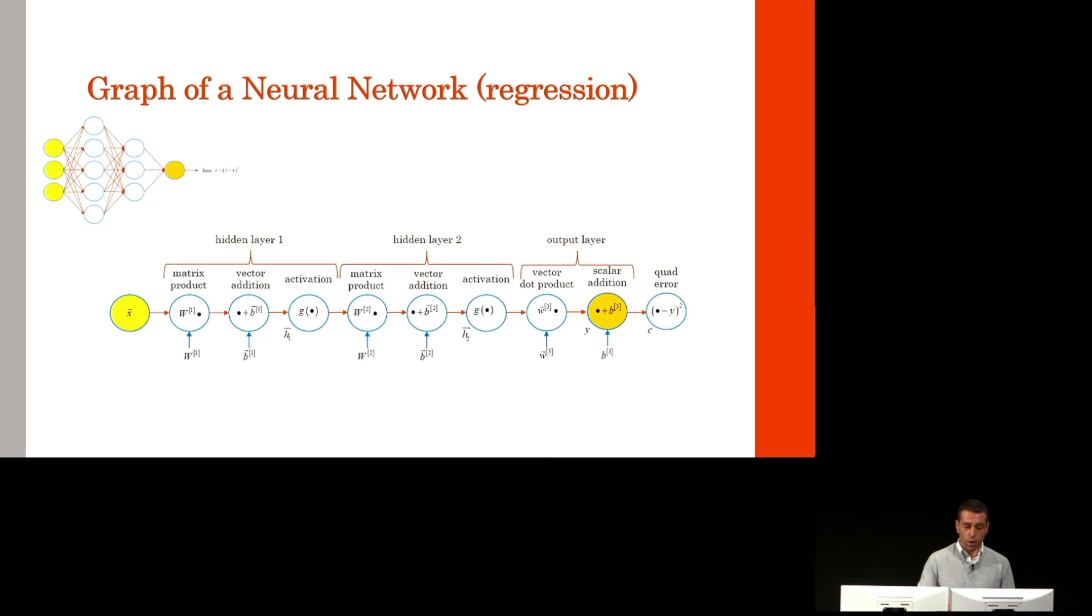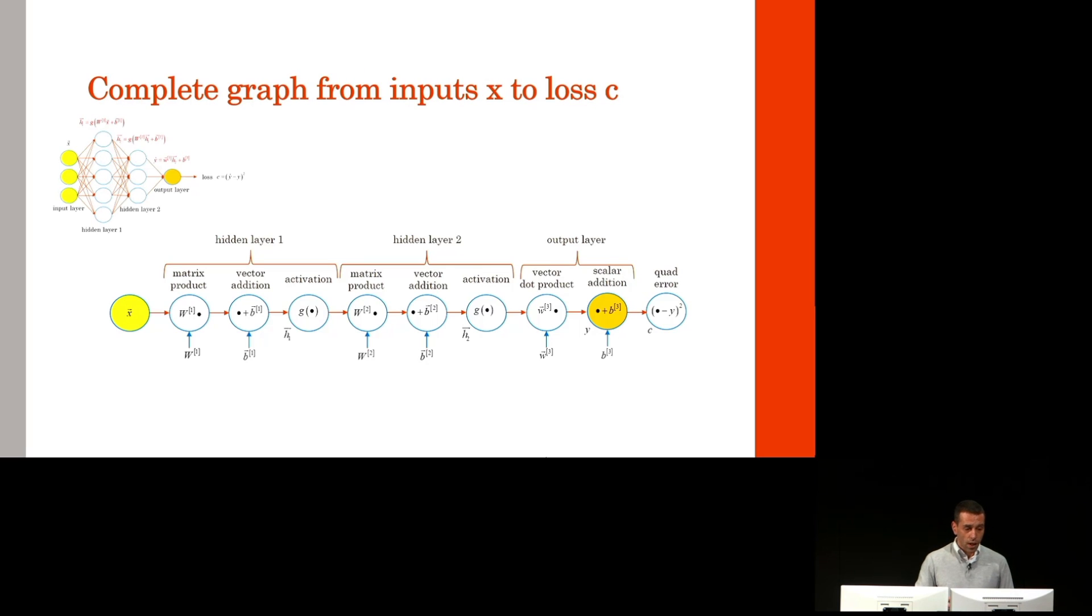Get your prediction, compute a loss. In this case, the square prediction error. This gives you the complete computation graph from inputs X to loss C.